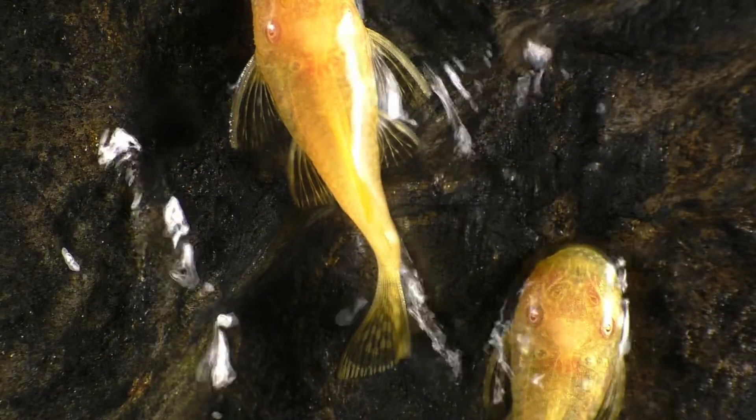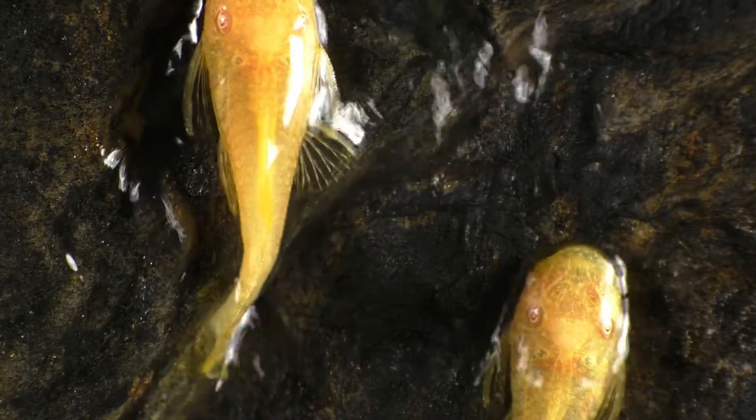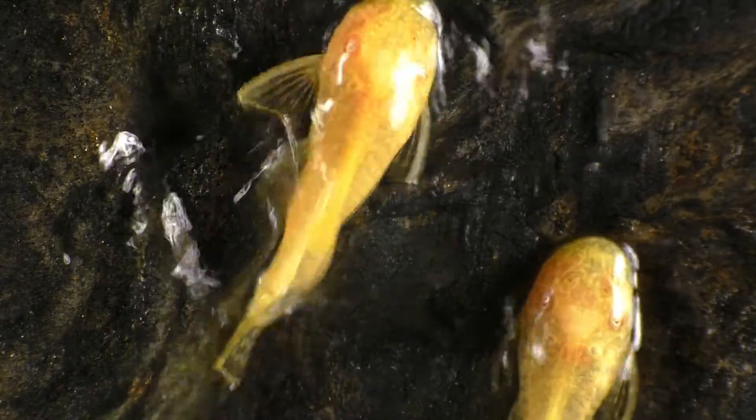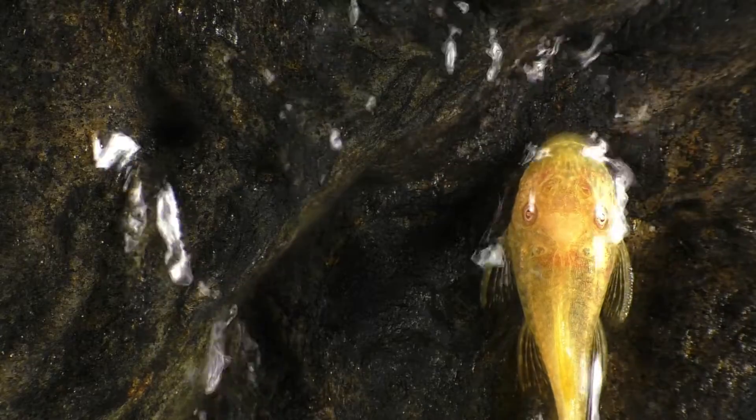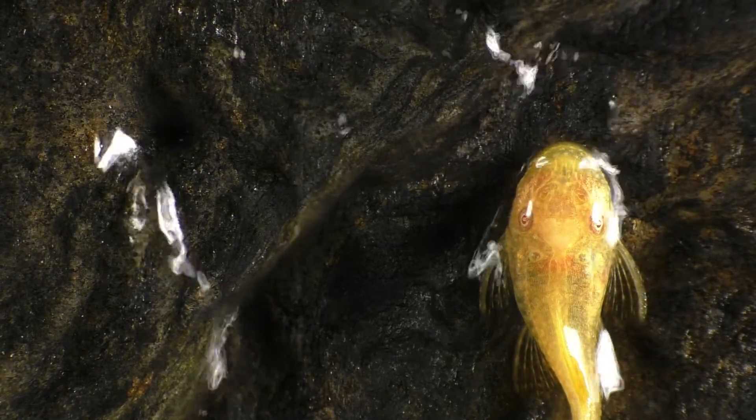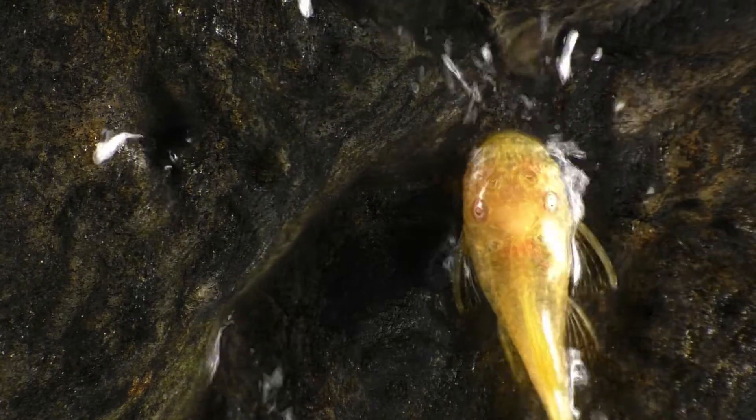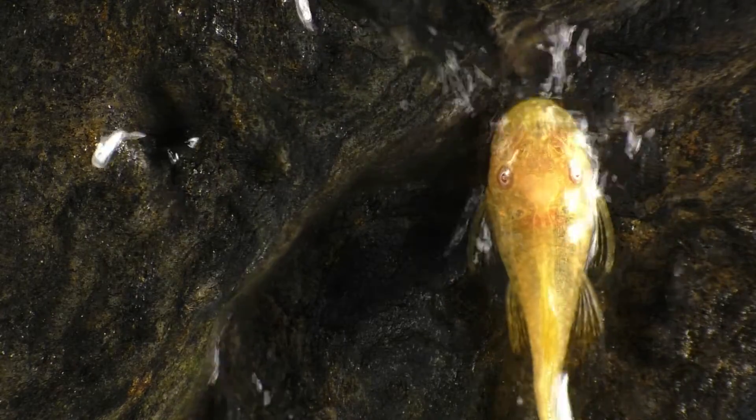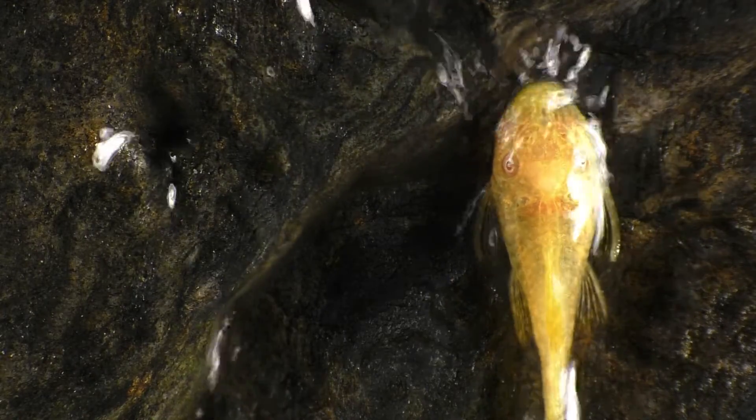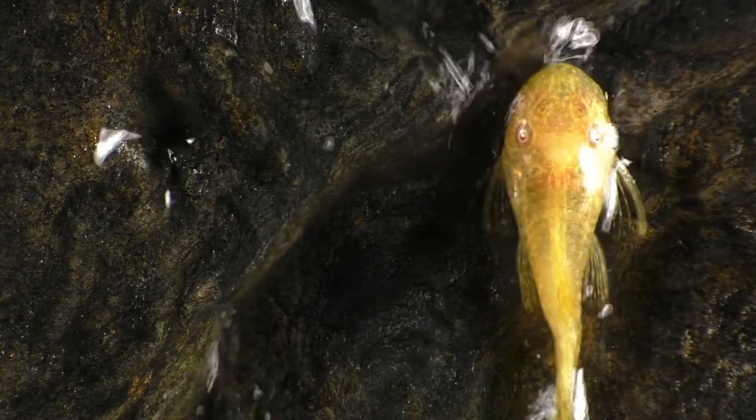The plecos are attaching to the skin of the manatees to feed off of the algae that grows on their backs, and I've seen footage of a dozen or more plecos attached to one of these gentle giants. Manatees are amazing creatures that have enough to worry about without having to fend off giant hordes of invasive common plecos.